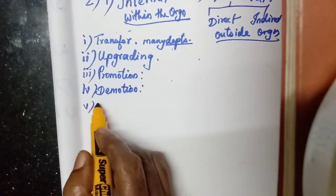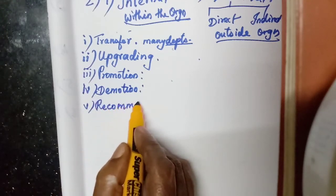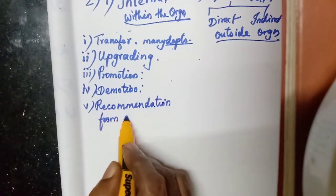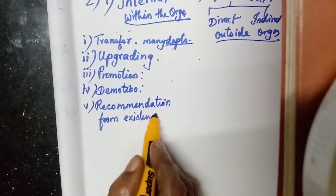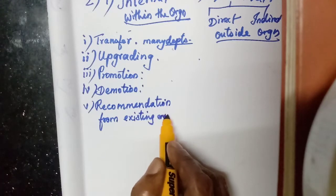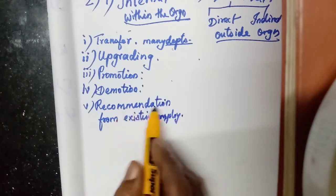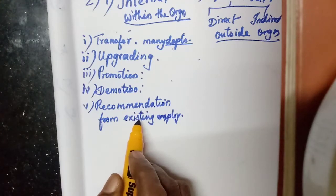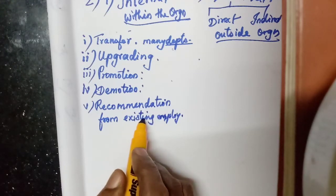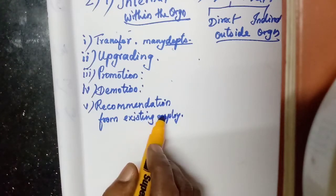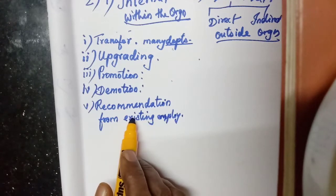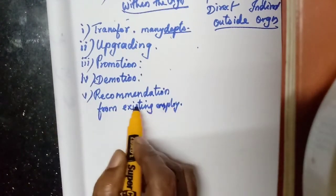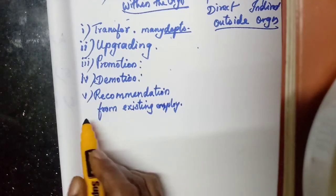Recommendation by existing employees: the existing, present employees may recommend some other people to be appointed as employees in their organization. For example, those existing employees' friends, relatives, or their own family members — they can recommend for the recruitment of some other people. That is called recommendation from existing employees.